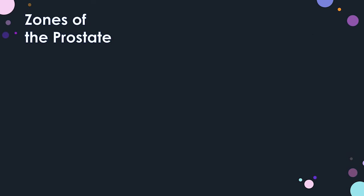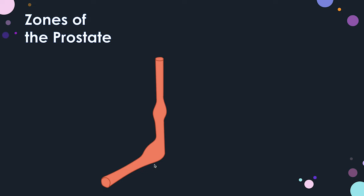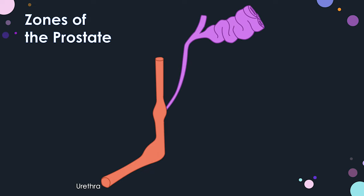Now let's look at the zones of the prostate. This shows the different parts of the urethra: the pre-prostatic urethra, the prostatic urethra, the membranous urethra, the spongy urethra, and the bulbar part of the spongy urethra. We can see the pair of ejaculatory ducts, the vas deferens, and the seminal vesicles opening into the prostatic urethra, bringing sperms and semen.